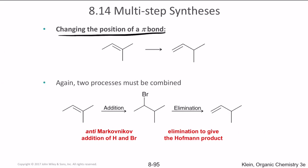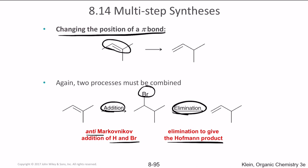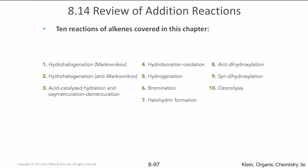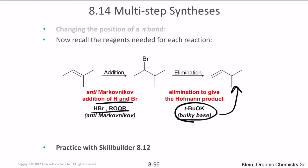The second multi-step concept involves changing the position of the pi bond itself. This requires first an addition reaction to remove the double bond by adding certain reactants — for example, anti-Markovnikov addition of hydrogen and bromine — and then eliminating to create the Hofmann product using a bulky base such as potassium tert-butoxide. The addition reaction uses a peroxide to achieve anti-Markovnikov addition, and the bulky base then generates the Hofmann product.